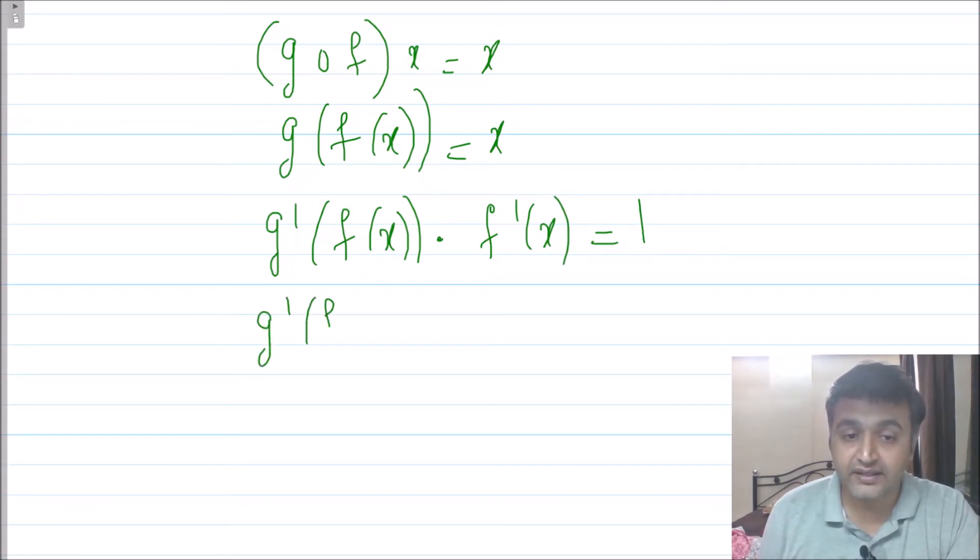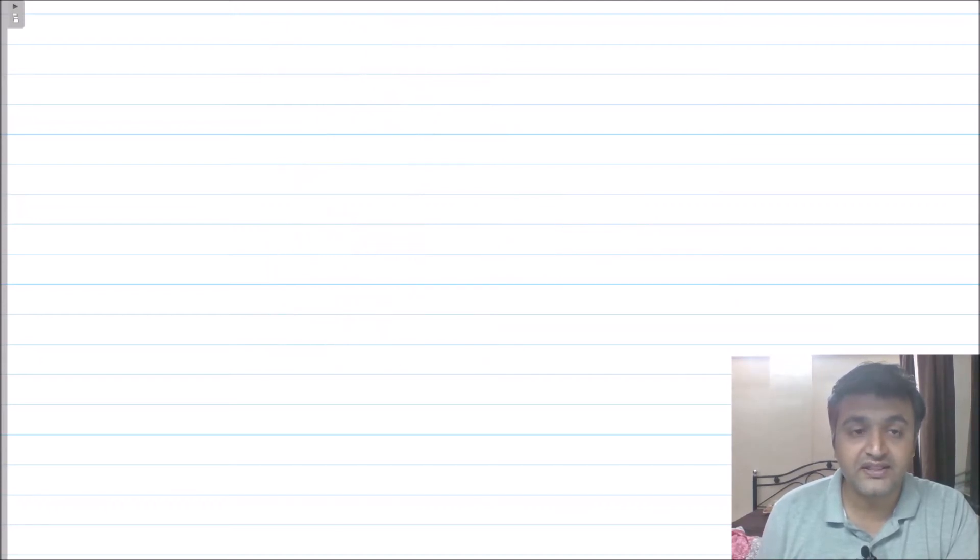Now what is f dash of x? Let me write on the next page. My f of x, or f of t, is the integration from 2 to x of dt upon square root of 1 plus t raised to 4. So what is f dash of x?